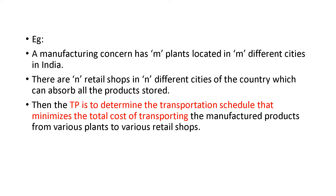For example, consider a transportation problem with m number of plants. One manufacturing company has m number of plants located in m different cities. N retail shops are distributed across the country. So the source is m plants and the destination is the retail shops distributed in N different cities.